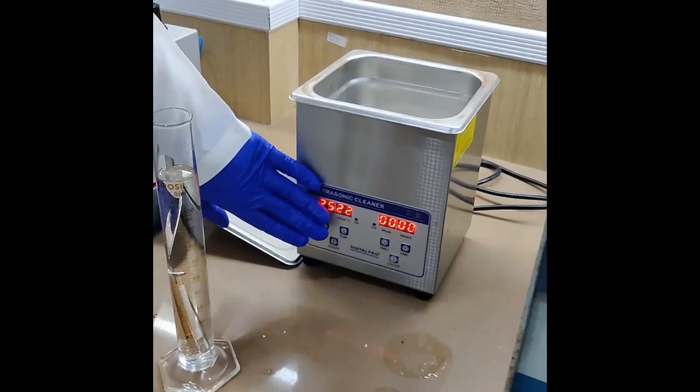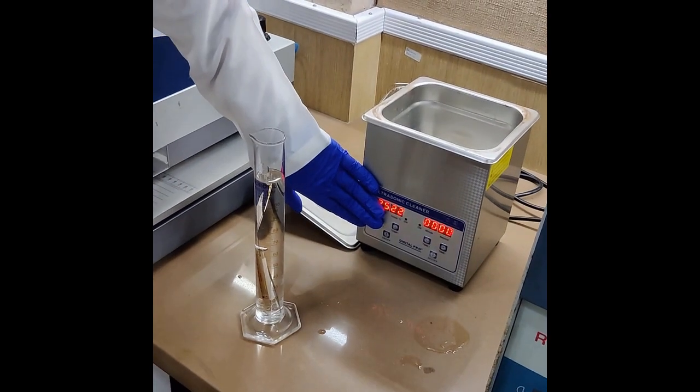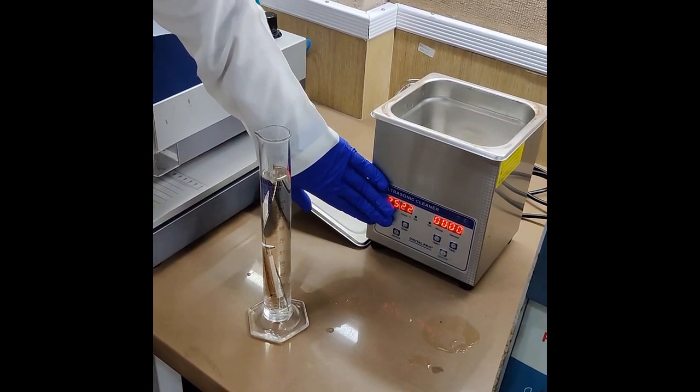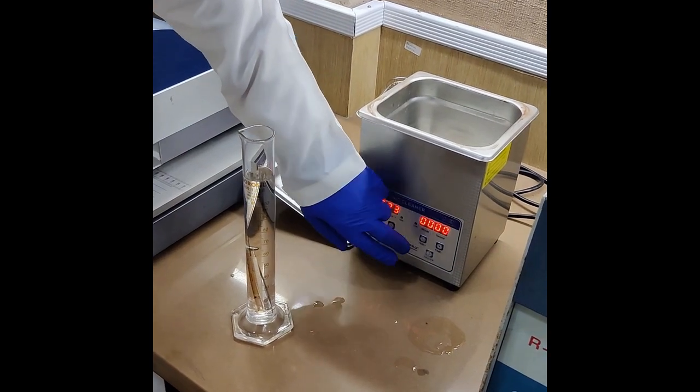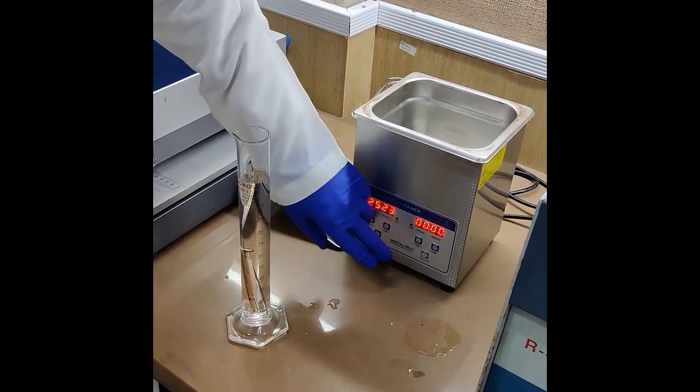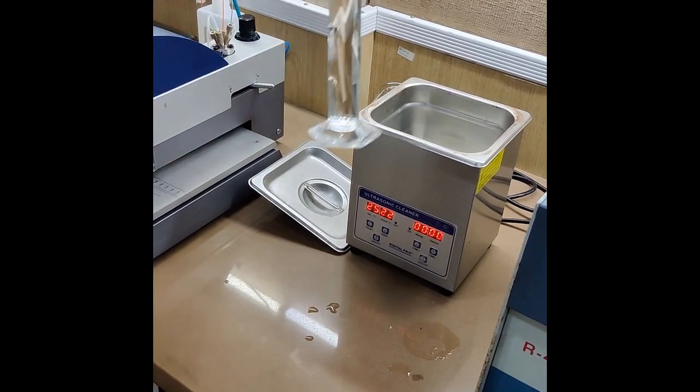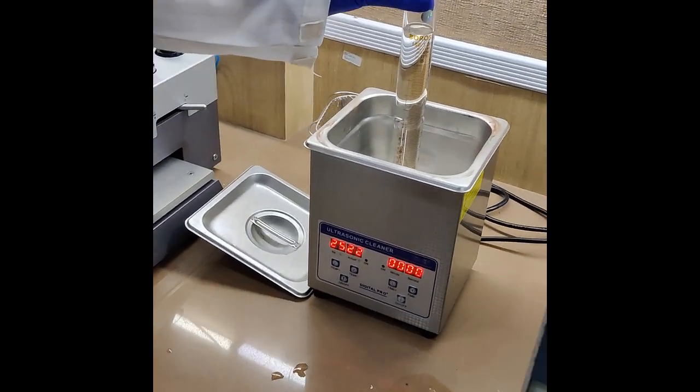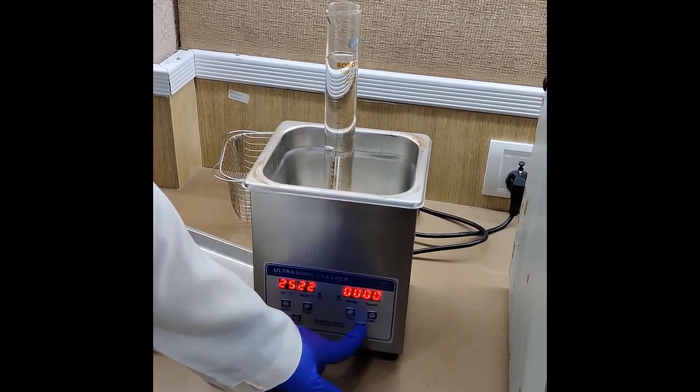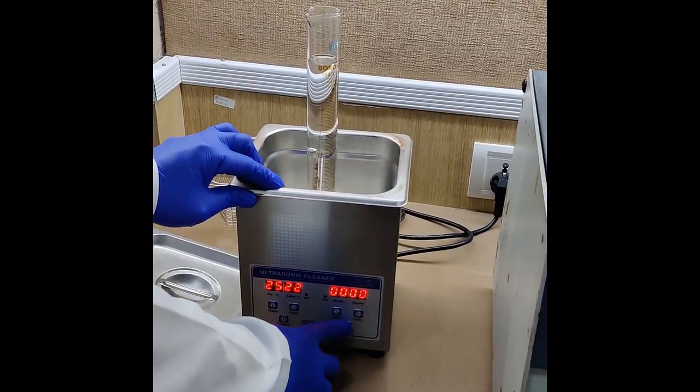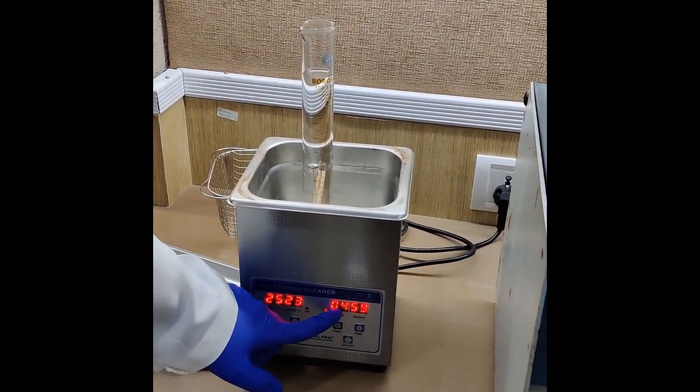If a temperature option is available, you can select a higher temperature, but please make sure it is not more than 60 degrees Celsius and the time has to be set for 20 minutes. Simply put the measuring cylinder in the sonicator bath and switch it on. Note the timing—it should be done for 20 minutes. We will be giving 4 cycles of 5 minutes each.